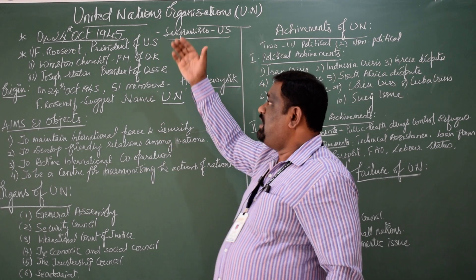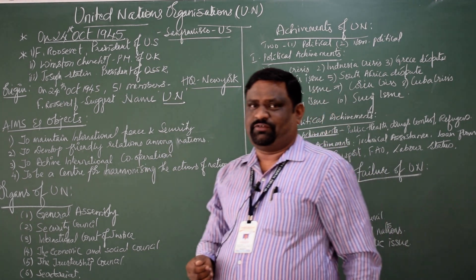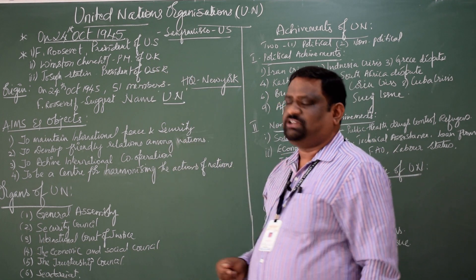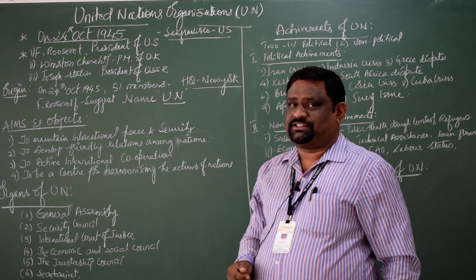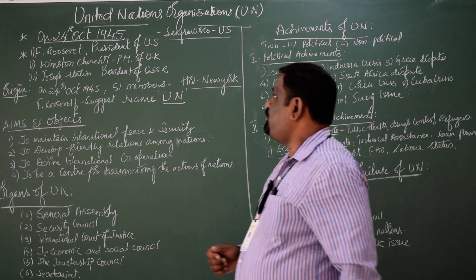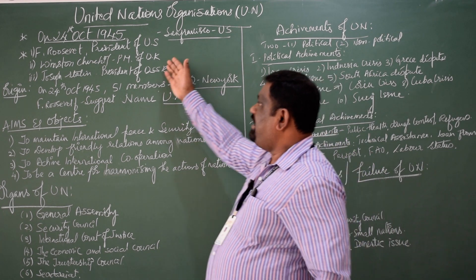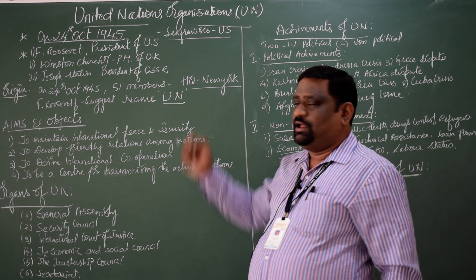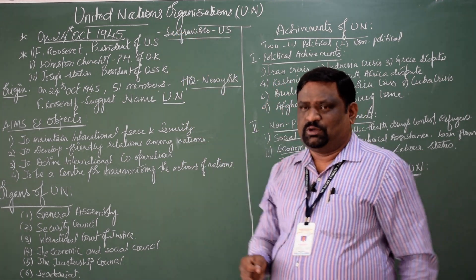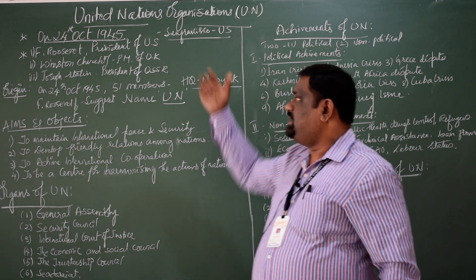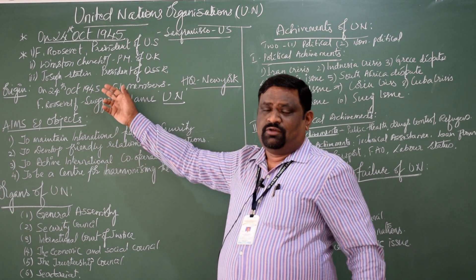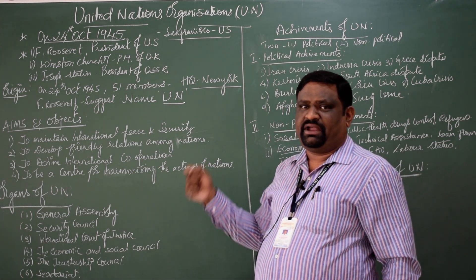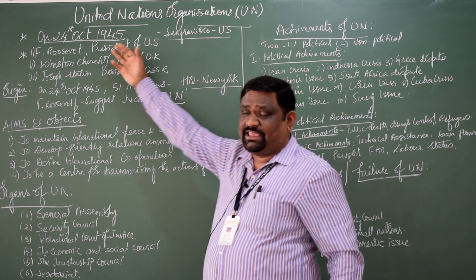On 24th October 1945, the founders — Franklin Roosevelt, President of the United States of America, Winston Churchill, former Prime Minister of the United Kingdom, and Joseph Stalin, President of the Union of Soviet Socialist Republics — planned and drafted the charter of the United Nations at San Francisco. Along with these three member countries, 51 countries were present and they signed the draft which was prepared by the San Francisco Conference in the year 1945.